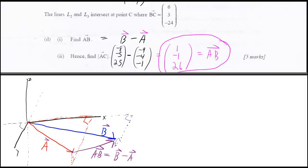That's the answer right there. They started off this problem by talking about vector BC, saying that lines L2 and L3 intersect at point C, where BC gives you (6, 3, -24). But all you have to do is realize that if you're going from A to B, and then from B to some point C, from B to C we would call that vector BC. And from A to B, we call that vector AB.